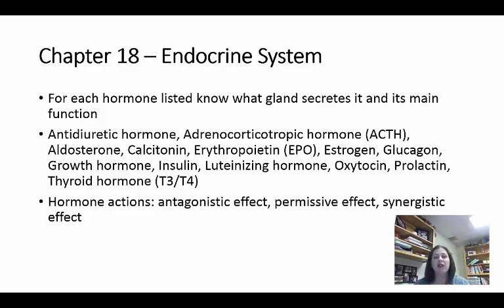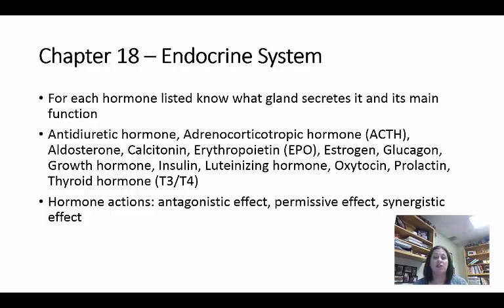Estrogen is often linked with progesterone — both stimulate female sex characteristics and help regulate the menstrual cycle. Estrogen levels change during the menstrual cycle, affecting when ovulation and implantation of an egg takes place. Glucagon is released by the pancreas and helps with blood sugar — instead of decreasing it like insulin, it increases blood sugar. Growth hormone is released by the anterior pituitary and causes growth, mostly talking to your bones and muscles.